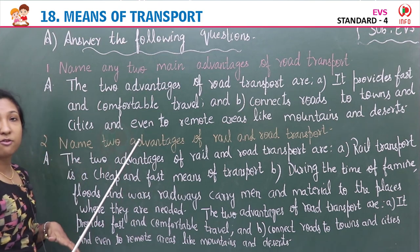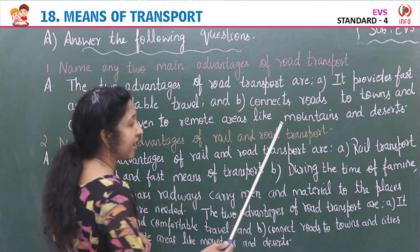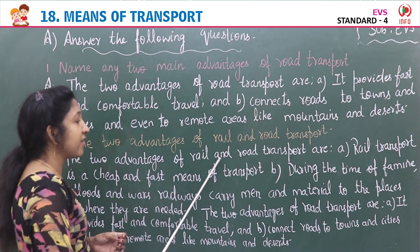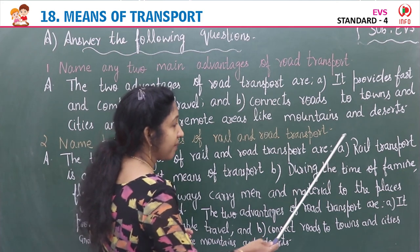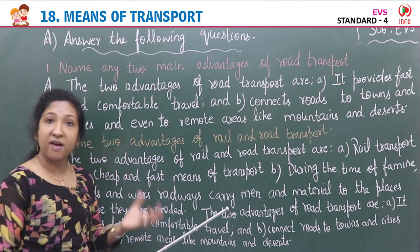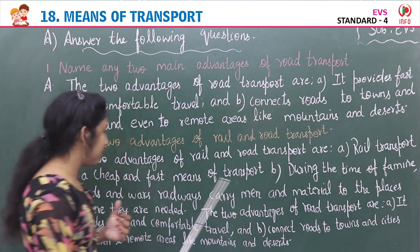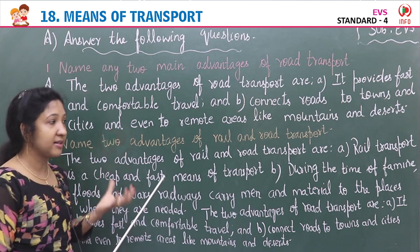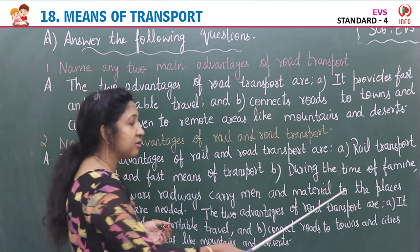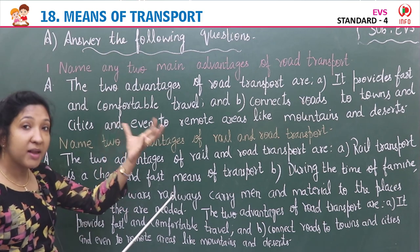Question two: Name two advantages of rail and road transport. The two advantages of rail transport are: (a) rail transport is a cheap and fast means of transport — it is the fastest means of transport and also cheap. (b) During times of crisis like famine, floods, and wars, railways carry men and material to the places where they are needed.